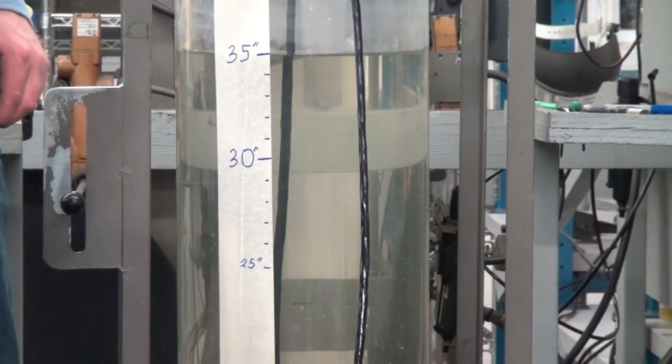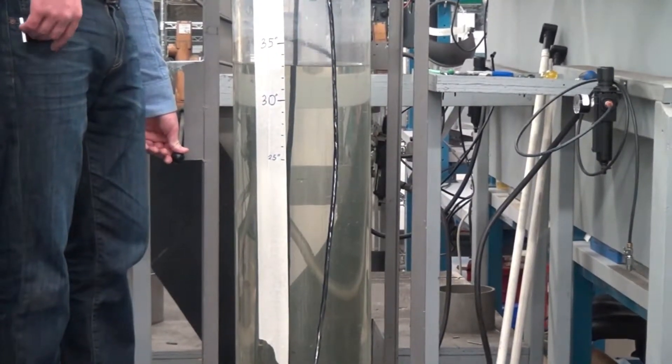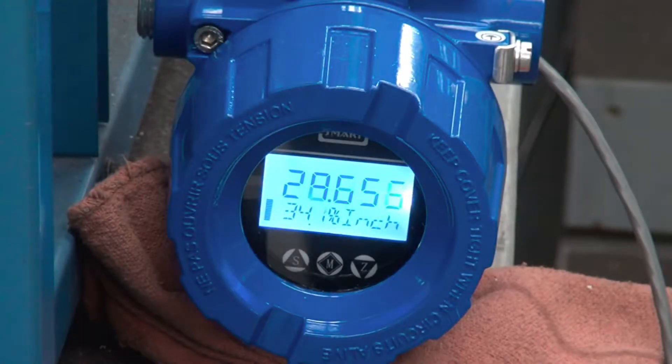If we change the level from 35 inches of water column down to 25 inches of water column, you will see the level output change on the display as well.